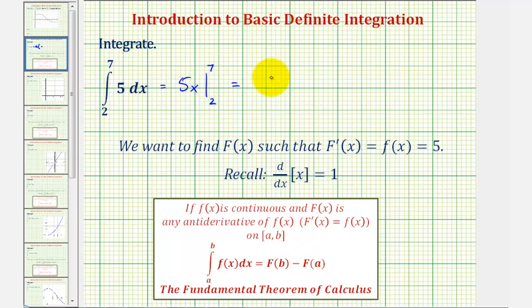So for big F of seven, we'd have five times seven, and then minus for big F of two, we'd have five times two. This is going to be 35 minus 10, which is equal to 25.